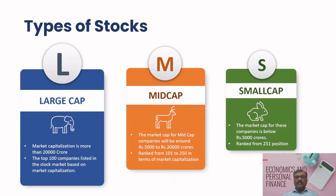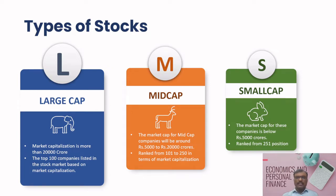The three main categories of stock based on market capitalization are large cap, mid cap, and small cap. For example, if a company has issued 100 stocks and the price of each stock is 100 rupees, then the market capitalization is 10,000 rupees.